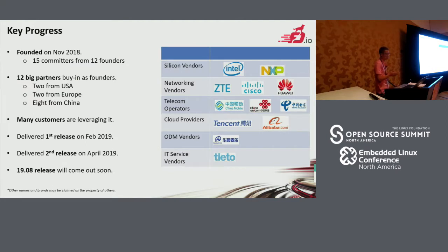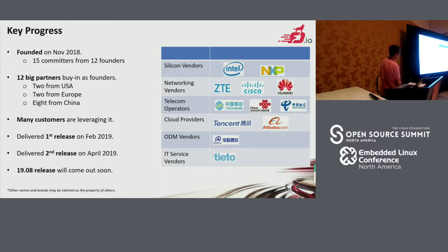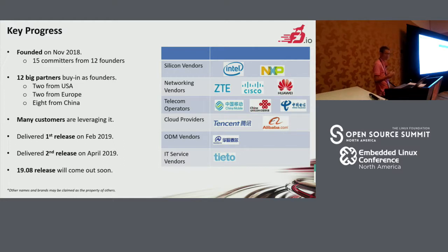This is the current key progress. This project was founded last November. There are 15 committers from 12 organizations — two organizations from the USA, two from Europe, and eight organizations from China. These 12 organizations cover a matched ecosystem. For silicon vendors, there are Intel and XP. For network vendors, there are ZTE, Cisco, and Huawei.